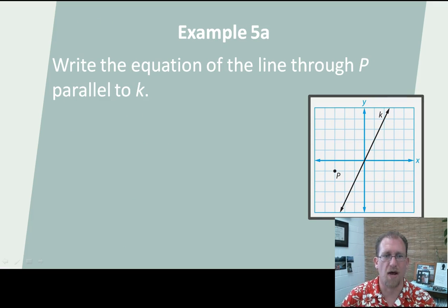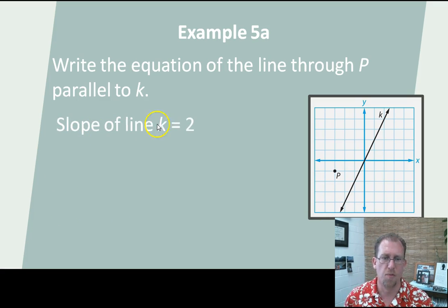Here's another example. Write the equation of a line through P that's parallel to k. First thing we need to do is figure out the slope of k. Remember, parallel lines will have the same slope. And then I'm going to use point P as a point on a line with that same slope, and I can write the y-intercept form. So here we go. Slope of line k is 2. And I can demonstrate that by going up 2 and over 1. So the slope of k is 2.